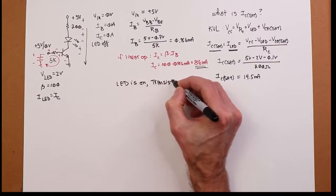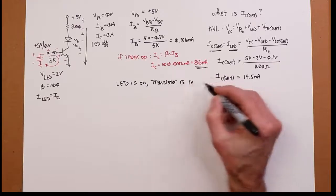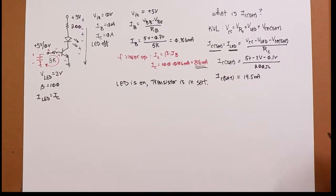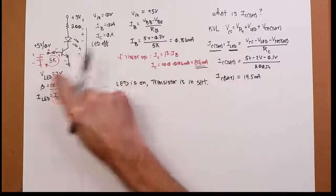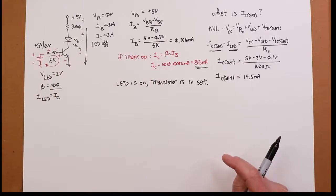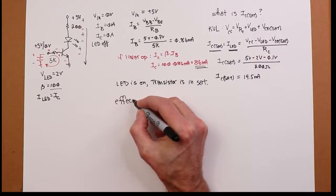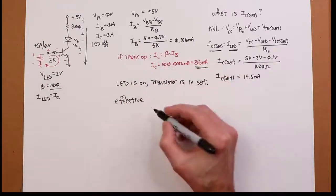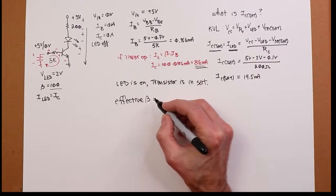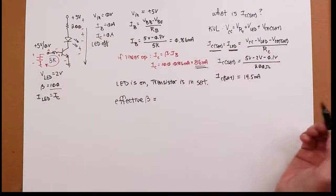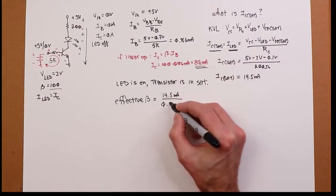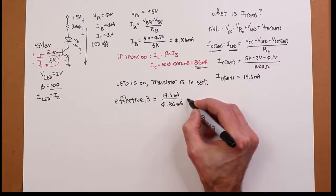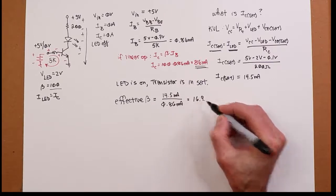Transistors in saturation. Hey, what about the beta of 100? Well, remember, if we're in saturation, the beta falls, collapses to whatever is dictated by the circuit elements. Effectively, your beta right now, I should say the transistor's beta, is collector current divided by base current. That's always the case. Your IC is 14.5 mils. Your IB is 0.86 mils. Well, you divide that out, and you get 16.9. Well, here's the deal.